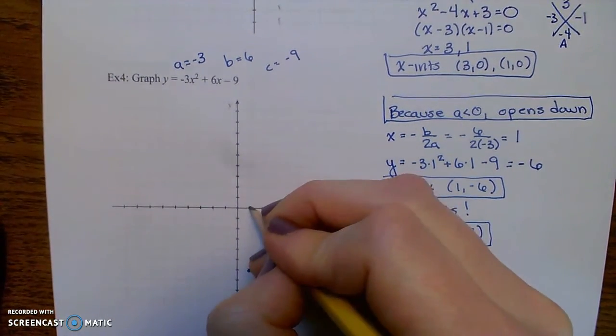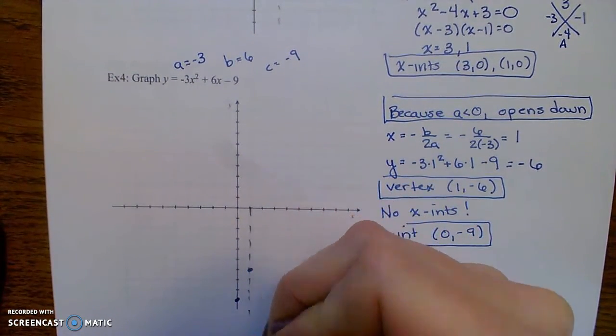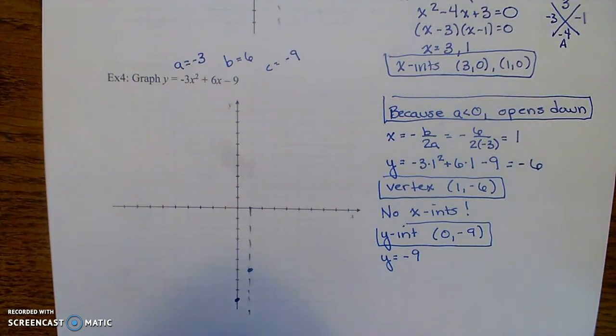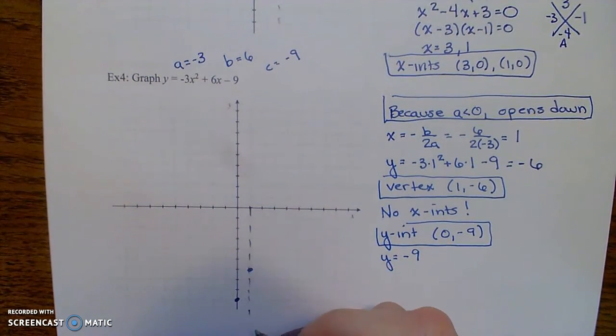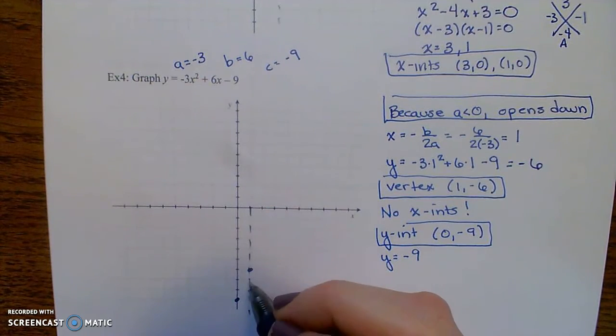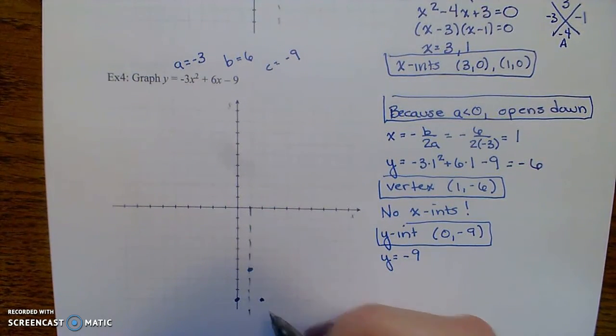And I can also find, because I know that the graph will be symmetric with respect to the line through the vertex, I'm expecting to see another point right there.